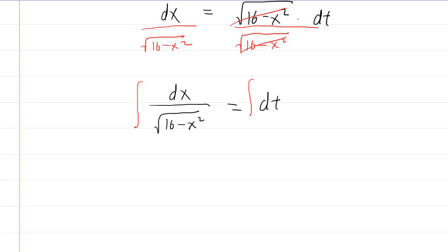In that technique, we would let x equal a sine of theta. Now, the a will come from the fact that this expression can be rewritten in the form of square root of a squared minus x squared.